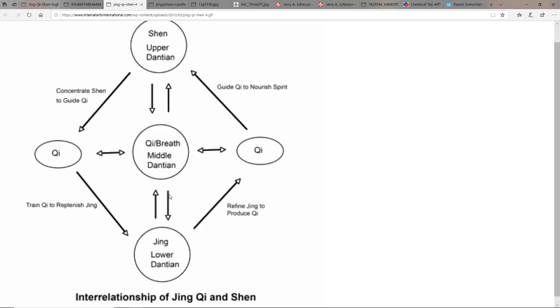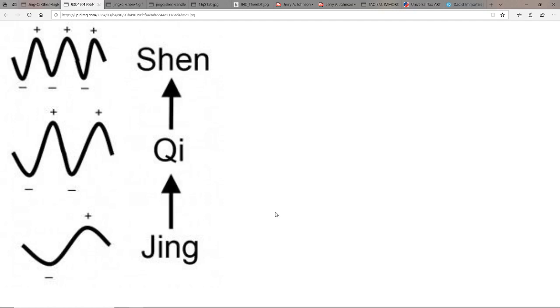It really is all about the breath. Concentration guides the chi, and you can train the chi to replenish the jing. So this is why qigong is such a powerful practice.